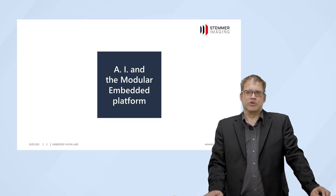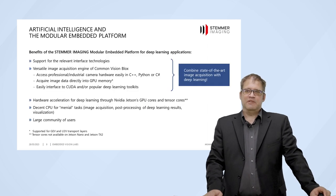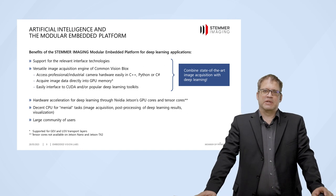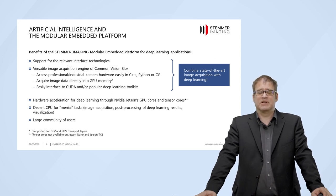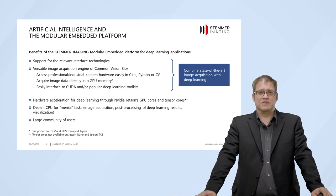Now let's have a closer look at our modular embedded platform. The benefits it brings are, first of all, in the interface technologies it supports: GigE and USB 3, which come natively from the Jetson system, but also 10 gigabit Ethernet and a usable MIPI interface for connecting cameras. All of these interface technologies are addressed with the same API — Common Vision Blox — allowing you to code the same way for all different interfaces, in C++, Python, or C#.